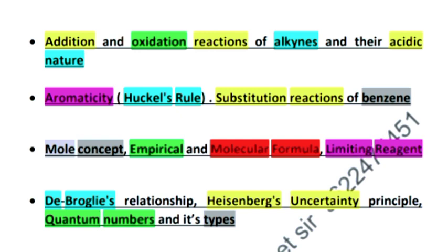De Broglie's relationship and Heisenberg's uncertainty principle will also be asked as numericals. Quantum numbers and its types - quantum numbers question will be very important.